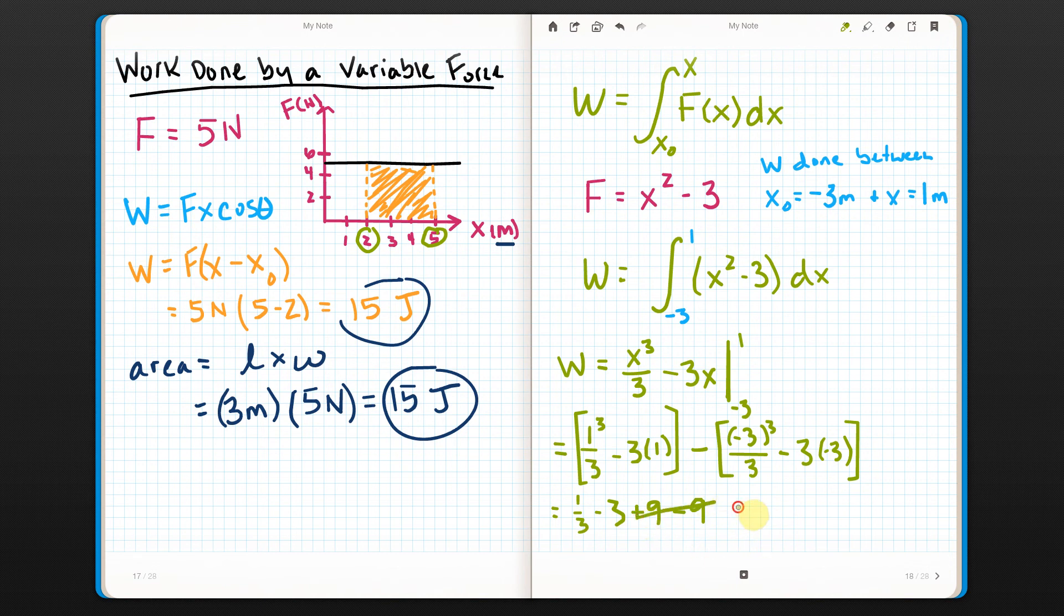So these are gone. And what I have is 1 3rd minus 3. I can't add fractions, so I'll just do it the long way. 1 3rd minus 9 3rds. That's negative 8 3rds. There we go. I got it. Negative 8 3rds of a joule.